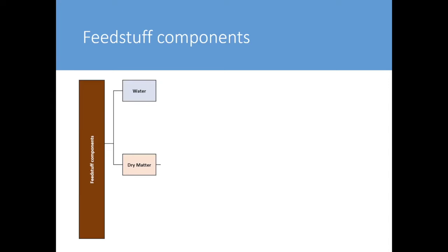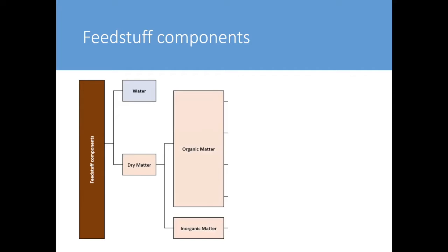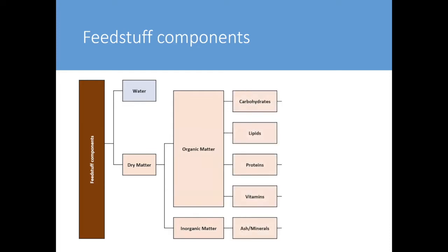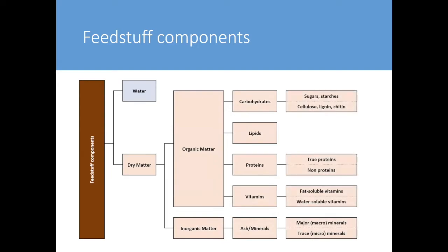Something helpful when thinking about other presentations in this series or reading feed labels is understanding how nutritionists talk about feedstuff components. Whenever you analyze feeds, there's something called proximate analysis — a standard set of agreed chemical analyses. They break feeds down by first eliminating or measuring the water, leaving the dry matter, which can be further split into organic matter and inorganic matter. Organic matter comprises carbohydrates, lipids, proteins, and vitamins; inorganic matter is what we term ash or minerals.